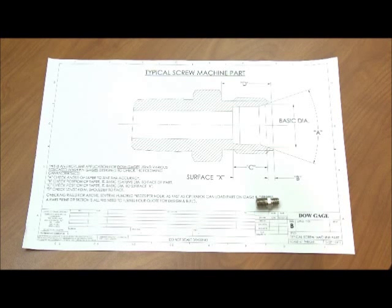This application is a demonstration of the Dow Educated Flush Pin Gauge system of parts checking. In this instance, we show a typical screw machine part of a hydraulic fitting.